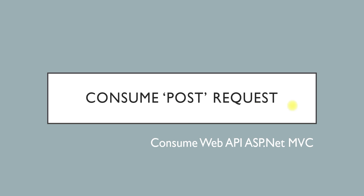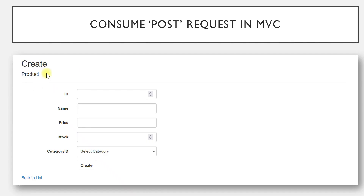This is our UI of our MVC application. ID, name, price, and stock will be accepted through a text box, whereas category is accepted through a drop-down list. We need to provide a list of categories from our web API, so we also need to write code at the web API end.